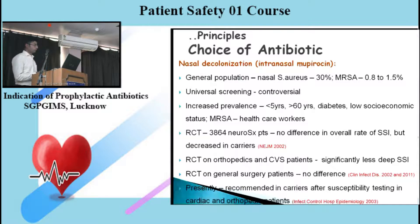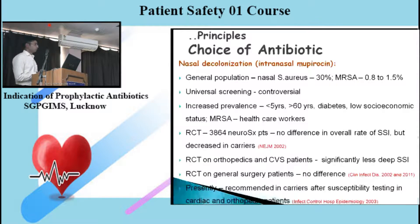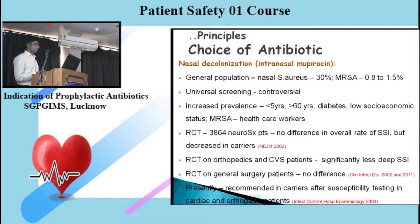Various studies have examined nasal decolonization. An RCT on around 3,800 neurosurgery patients found no difference in overall SSI rate when intranasal mupirocin was added to antimicrobial prophylaxis, but there was a decrease in SSI among patients who were carriers for nasal Staph aureus. An RCT on orthopedics and cardiovascular surgery patients suggested significantly less deep surgical site infection, though no difference in superficial SSI.